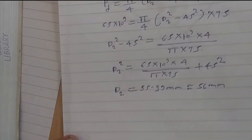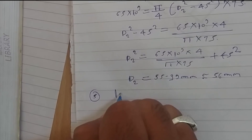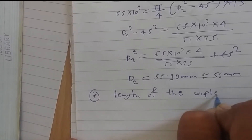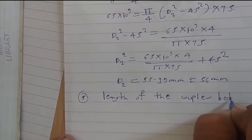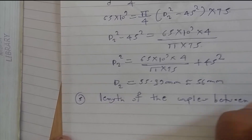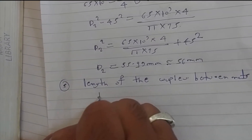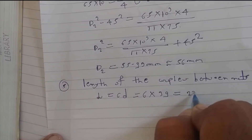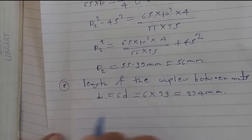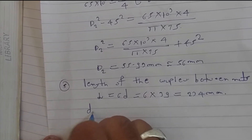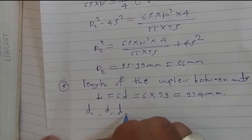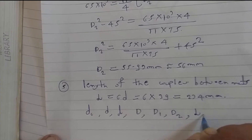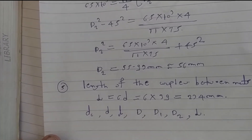The fifth step is the length of the coupler between nuts. By empirical relation, this is 6 × d = 6 × 39 = 234 mm. This completes the design of the turnbuckle, where we found dc, D, L (coupler nut length), outside diameter of coupler nut, d1, D2, and the coupler length.